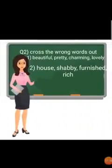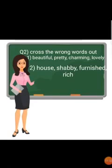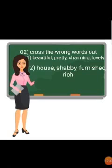Next question: cross the wrong word out. For example: beautiful, pretty, charming, lovely — beautiful, pretty, and charming are adjectives, but 'lovely' is an adverb, so 'lovely' is the wrong word to remove. Second example: house, shabby, furnished, rich — shabby, furnished, and rich are adjectives, but 'house' is a noun, so 'house' is the wrong word to remove. Write your answers this way.